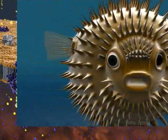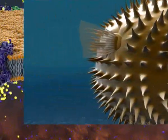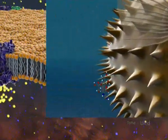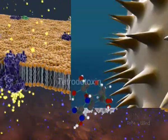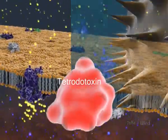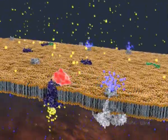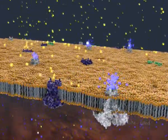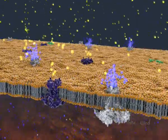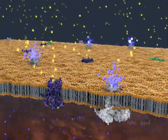Another example is the puffer fish, which uses tetrodotoxin, or TTX, for self-defense. TTX interacts with the voltage-sensitive sodium channel, blocking and restraining the influx of sodium ions through the channel, and halting the transmission of action potentials.